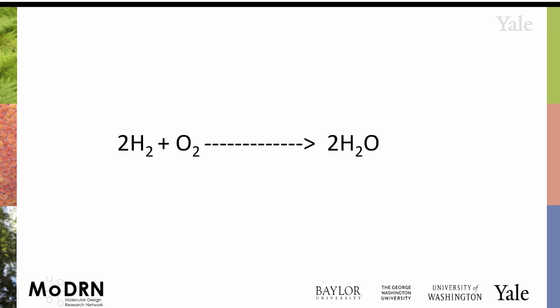And now is that one balanced? We have two times two, there's four hydrogens on this side, two oxygens. On this side, two times two, we have four hydrogens and two oxygens. So that one is okay. So this is the balanced equation.